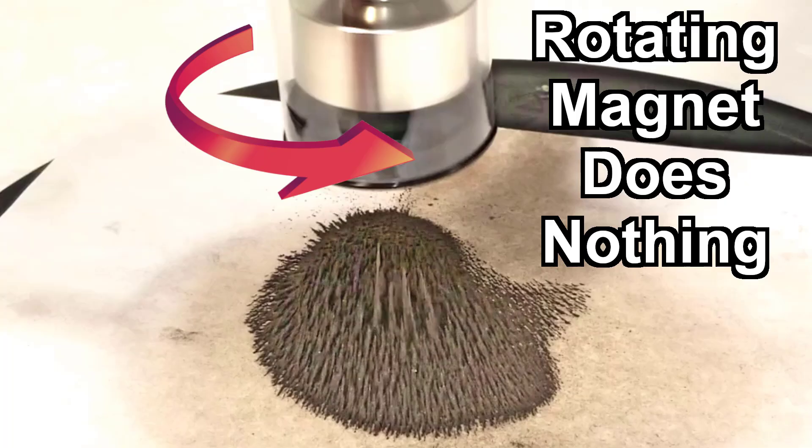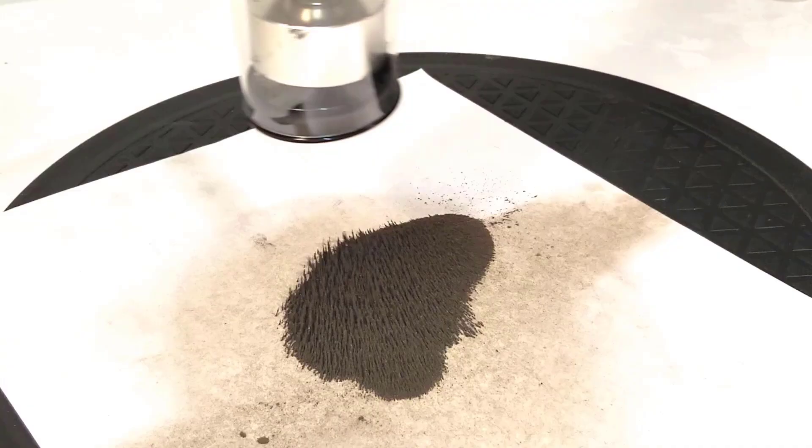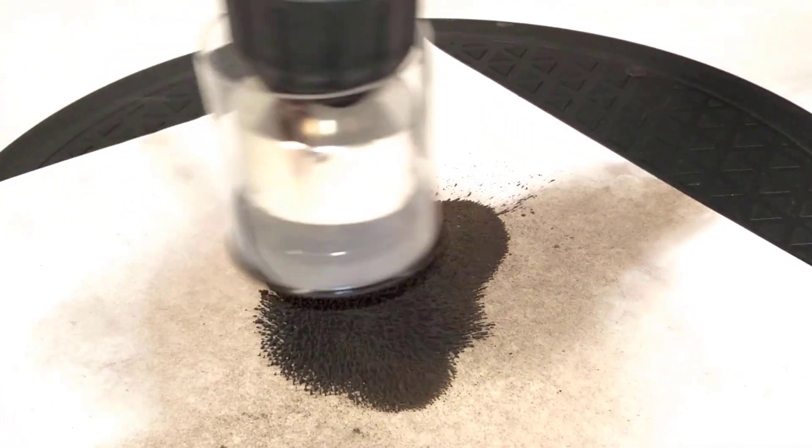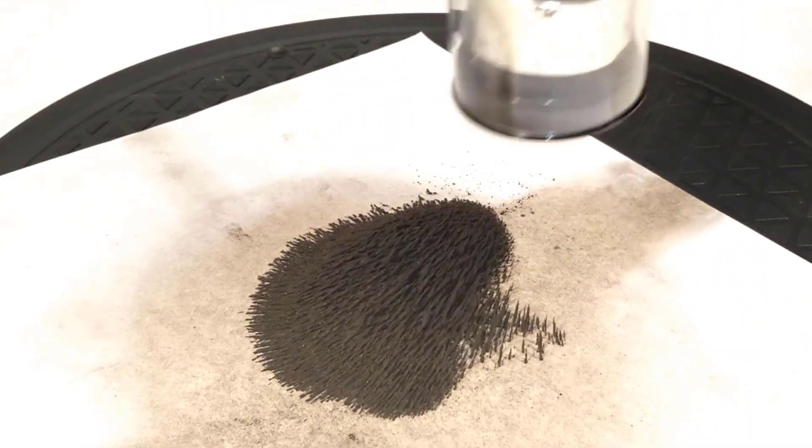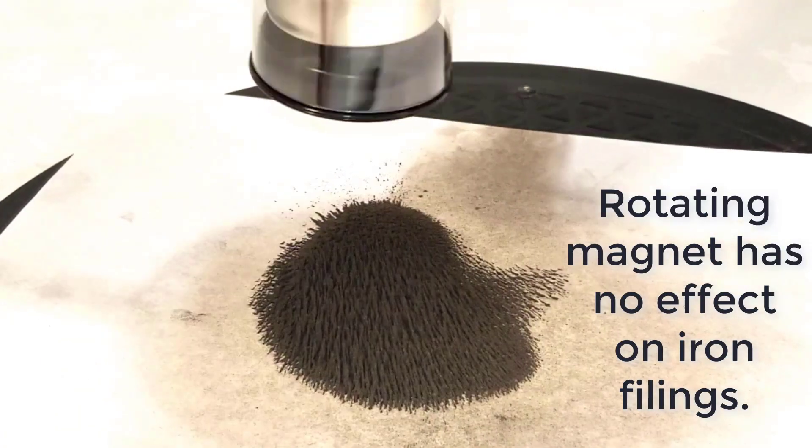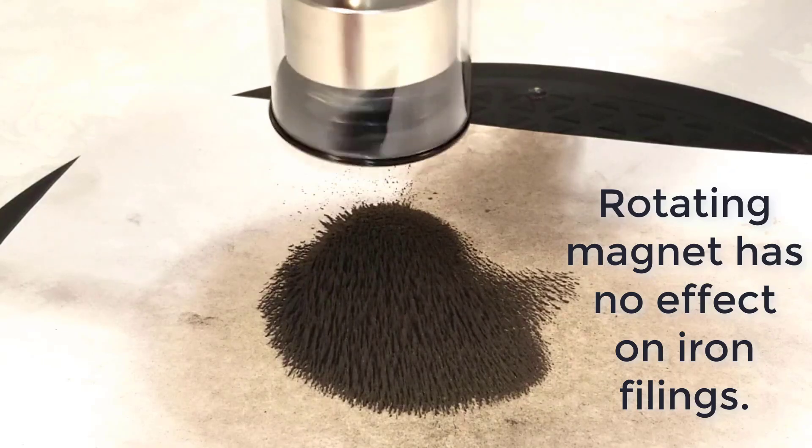Faraday's paradox can be visualized using a magnet and iron filings. Moving the magnet moves the iron filings. However, rotating the magnet has no effect on the iron filings.